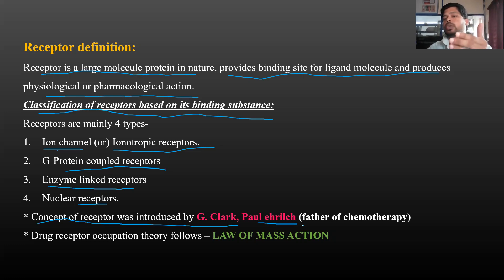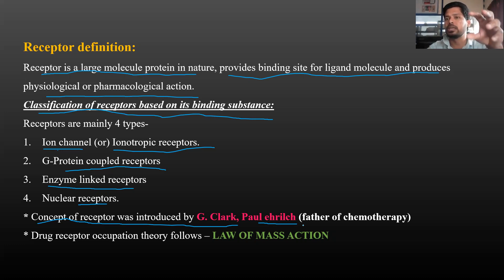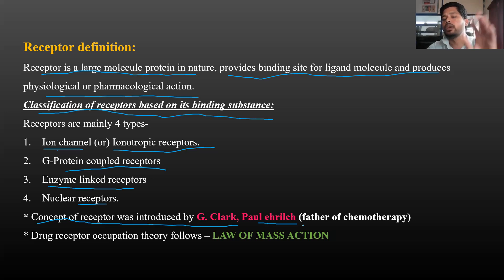Paul Ehrlich wanted to treat diseases. You can use sulfonamides, benzene, antibiotics, anticancer drugs, antiviral or antifungal components. He synthesized chemical compounds and used them against bacteria and viruses. That is why Paul Ehrlich is called the father of chemotherapy.